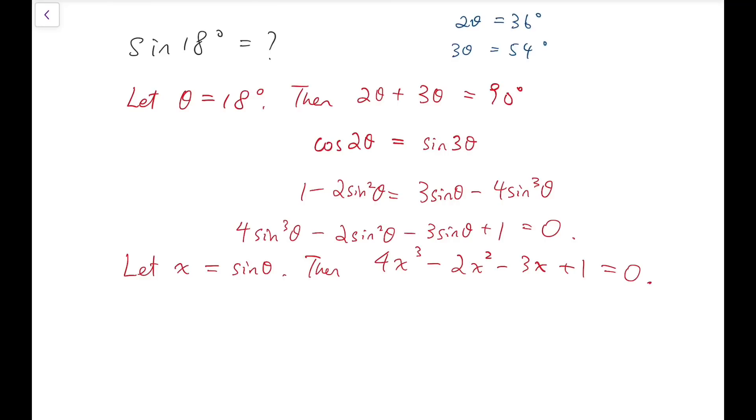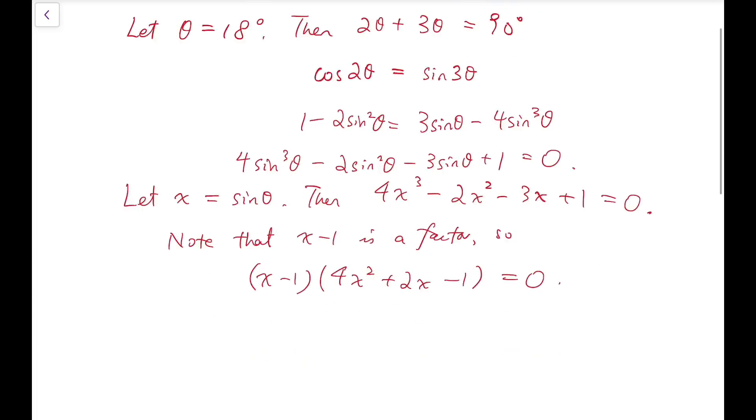So by looking at the coefficients, maybe you can quickly see that if I put x equals 1, then it's 0. And I just note that x minus 1 is a factor. So I divide the cubic polynomial by this and it's 4x squared plus 2x minus 1.